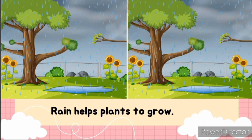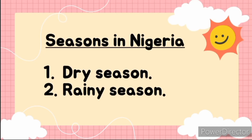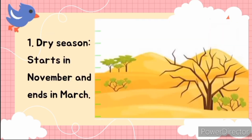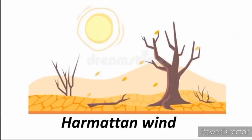Now let's look at the major seasons in Nigeria. We have two major seasons: the dry season and the rainy season. The dry season starts in November and ends in March. It is called harmattan, and during harmattan a dry wind comes from the Sahara Desert.